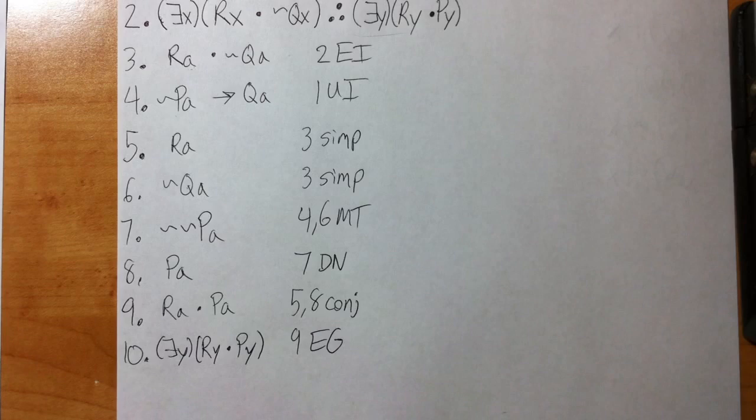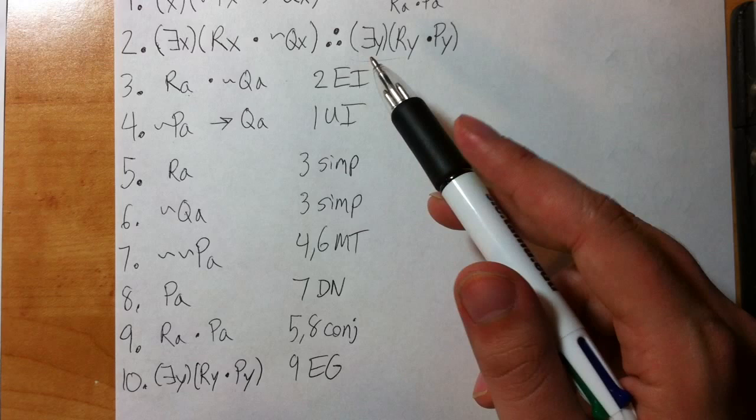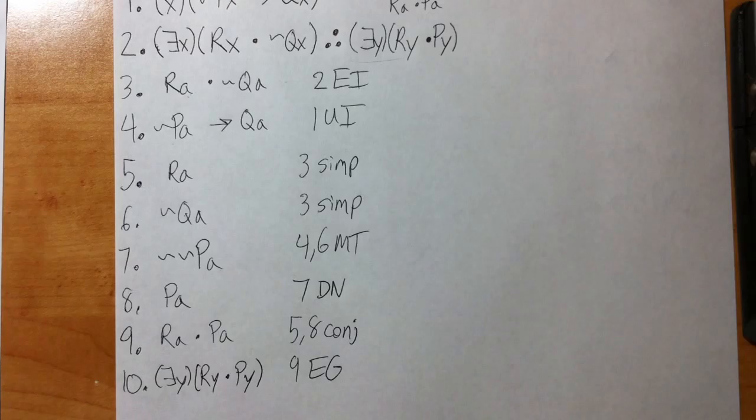And that's all there is to it. Really straightforward proof, not too difficult at all. Just really make sure, whenever you're using these new rules, ask yourselves the questions: do they violate those restrictions? The restrictions will be listed on the test, so you'll have that for you, and that'll really help you out. But really make sure you're doing that.